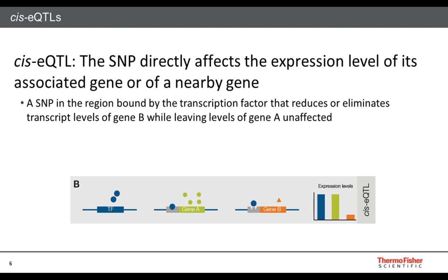On slide 6, it is shown that we can have so-called cis-EQTLs. The cis-EQTL is acting in cis — it affects the expression levels of associated genes or of a nearby gene. These EQTLs are usually located in the promoter region or a region close to the promoter region of a given gene. In this way, a polymorphism may modulate the affinity of the transcription factor with the target DNA region, modulating gene expression and altering the expression of the target gene.